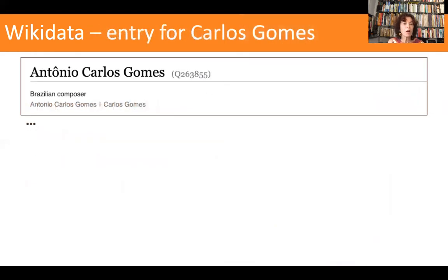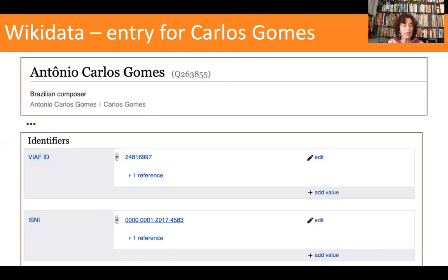We can see here an entry for Carlos Gomes in Wikidata. The header and identifier section shows two of the several identifiers present on his page. Wikidata is being used as a conciliator of multiple identifiers, thus providing linking.